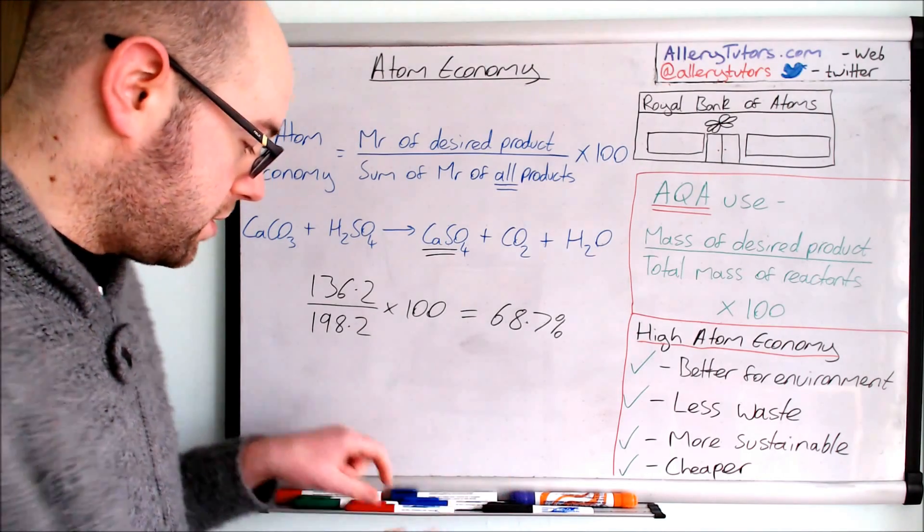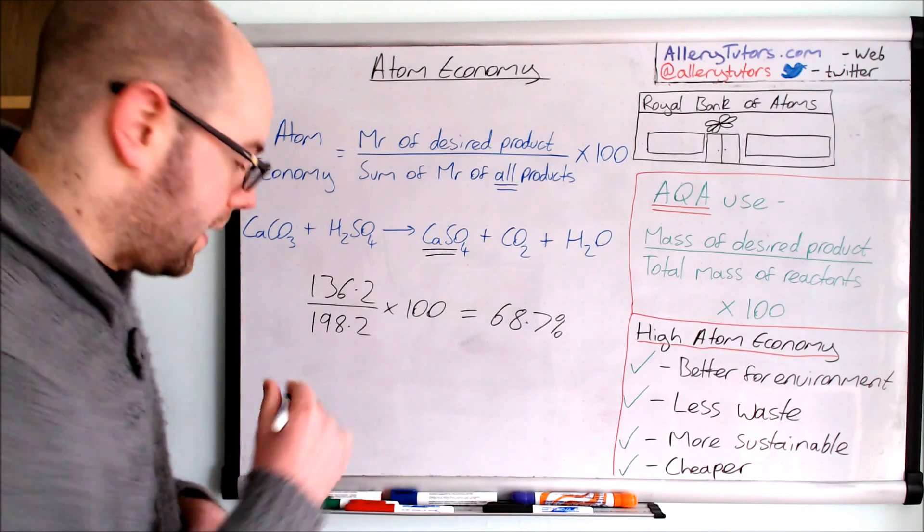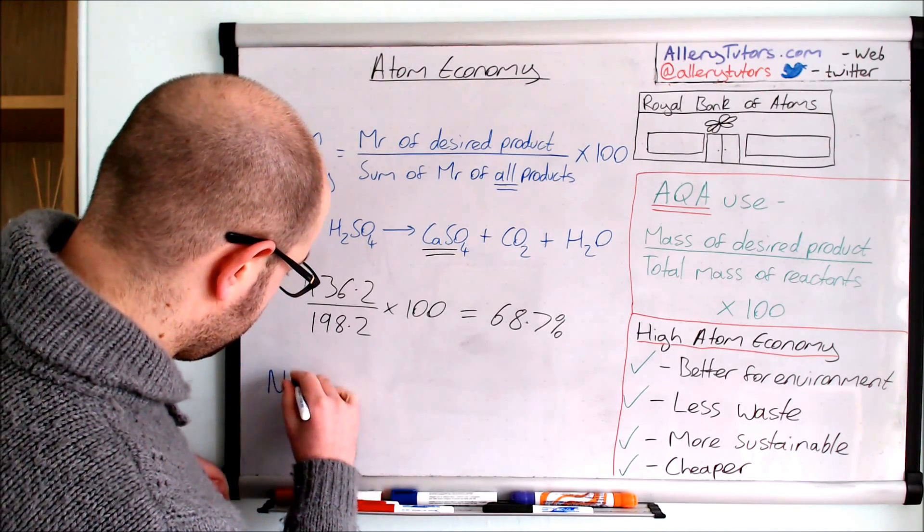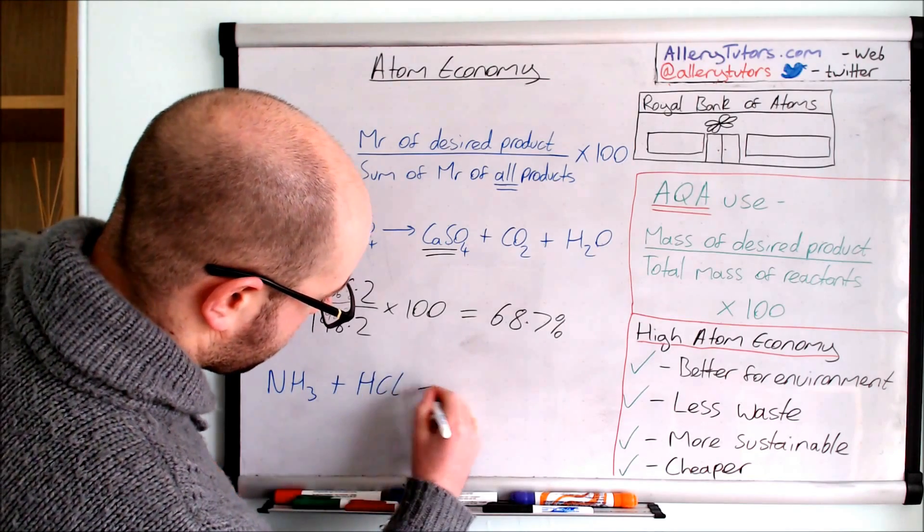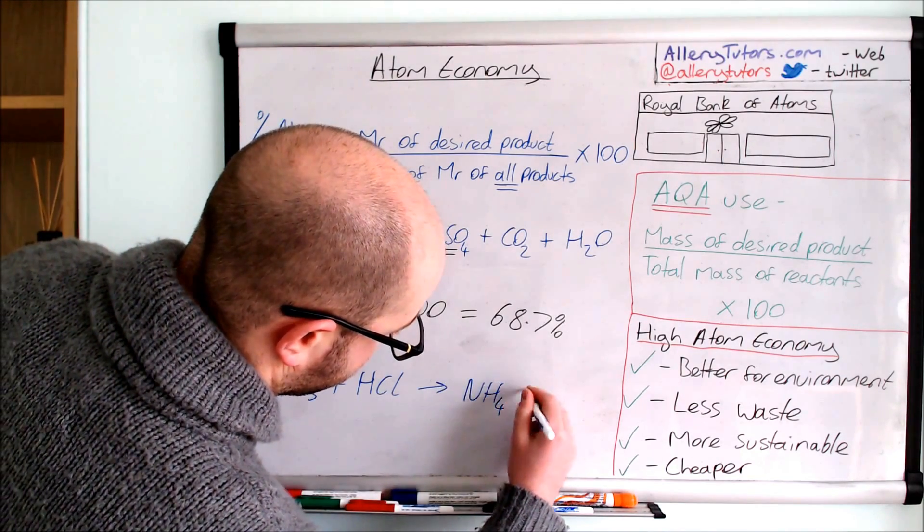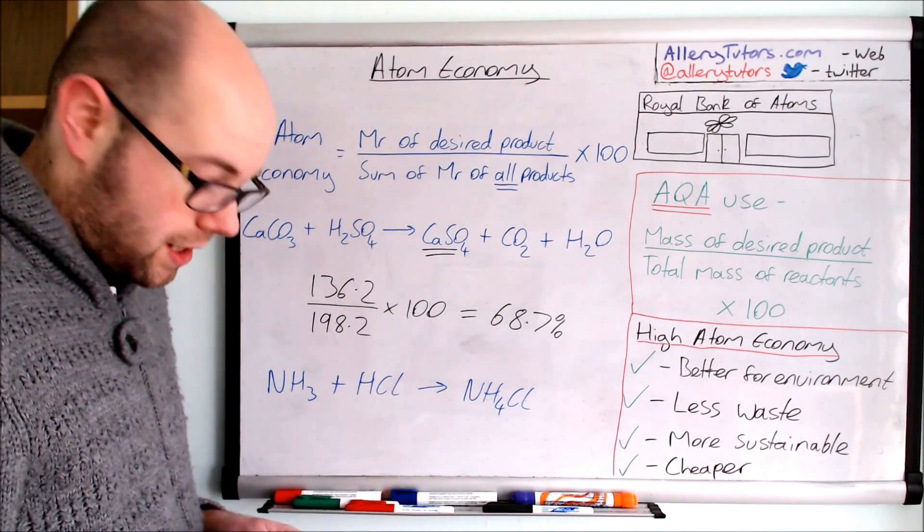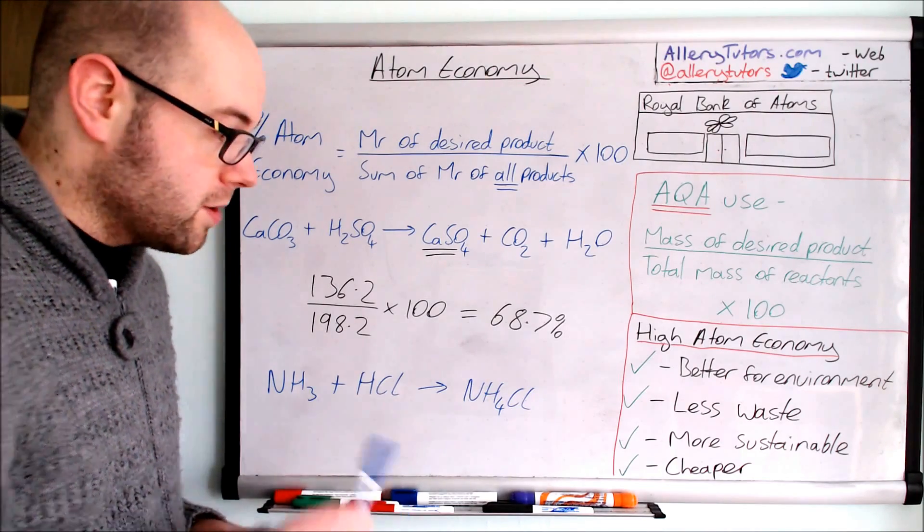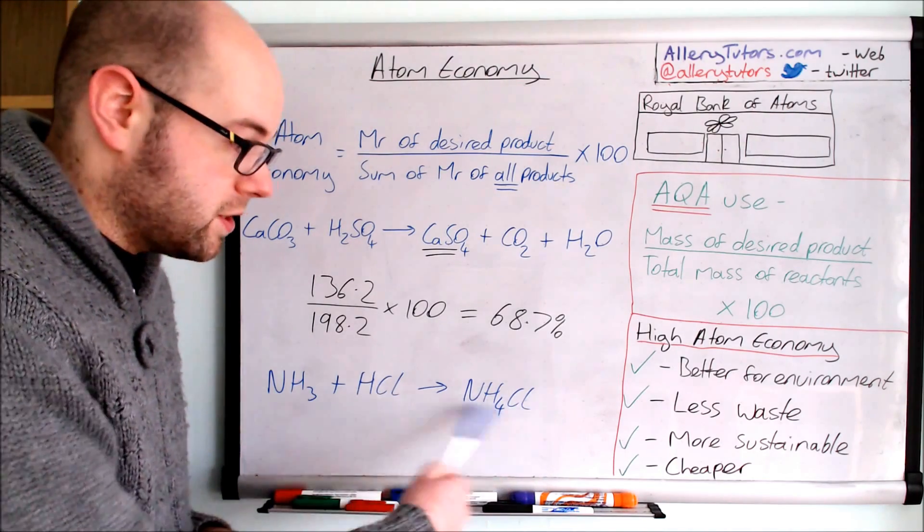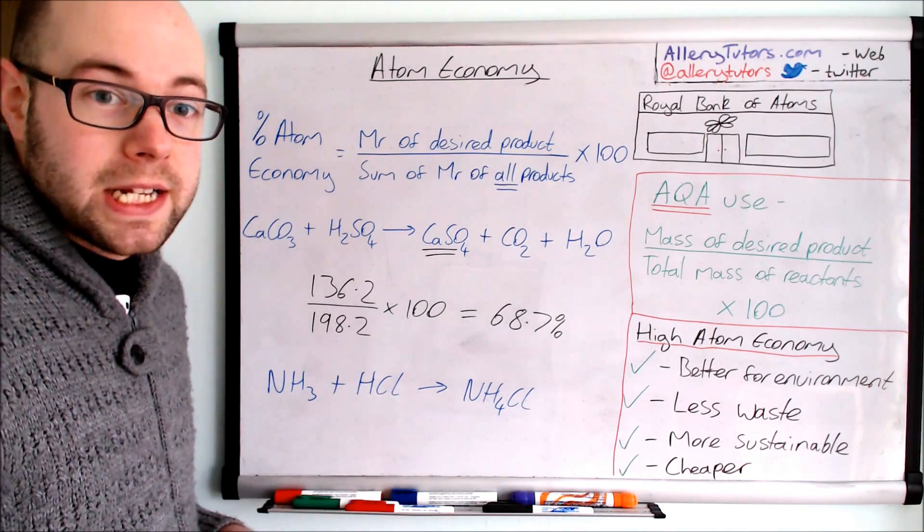So an example of this could be ammonia and hydrochloric acid. NH3 plus HCl and you can see this would form something called ammonium chloride. Now you can see we've only got one product here so that is an absolute classic sign of 100% atom economy. There's no other waste product there. This is the product we're wanting so ultimately this is the best you can effectively get.